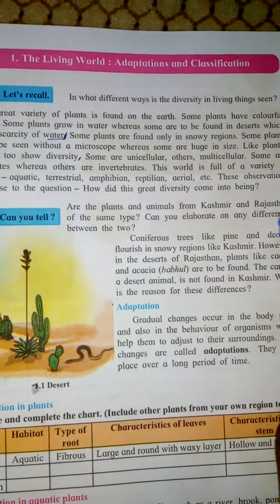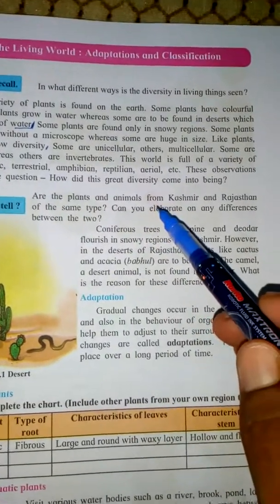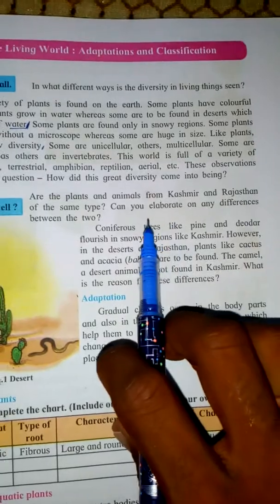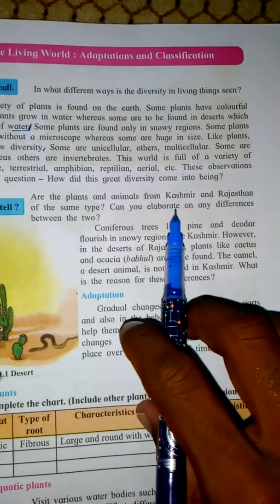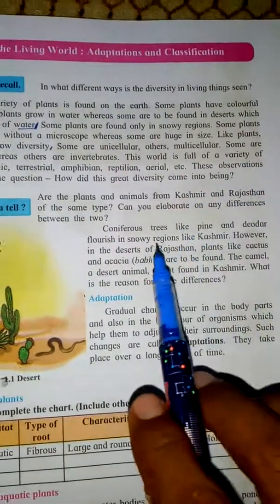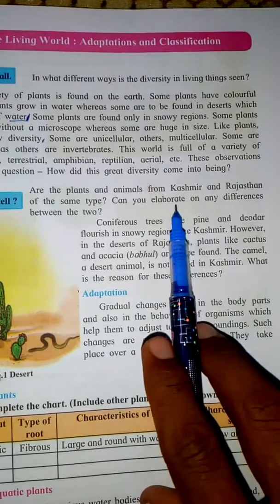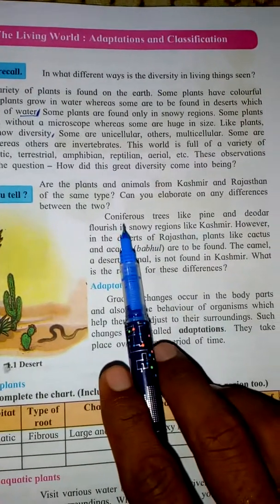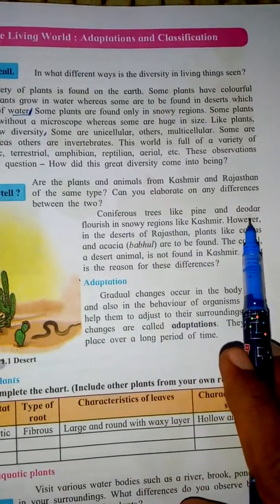Can you elaborate on any difference between the two? Students, can you tell me — do you know the key differences between Kashmir and Rajasthan in terms of plants and animals? Search for what differences exist. Okay, let's move on to the future topic. Trees like the pines and the cedar flourish in snowy regions like Kashmir.